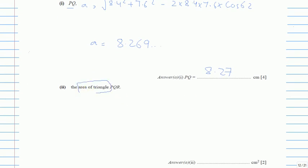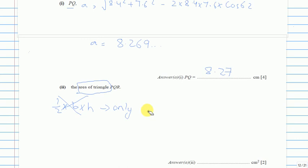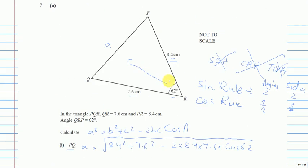Part two: the area of triangle PQR. You might think of half times base times height, but do not use that — it is only for right-angle triangles, just like SOH-CAH-TOA. This is not a right-angle triangle, so the formula is: Area = ½ × a × b × sin(C). The angle C must be the angle between the two sides a and b.